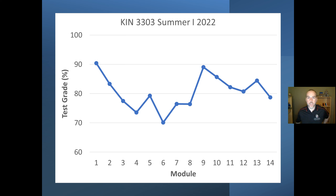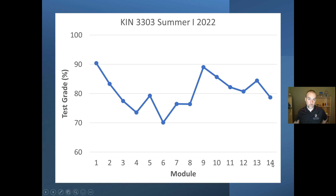So first, past student performance. This course is a little different every time I teach it, but looking at the previous semester — summer one 2022 — where it was very similar, you can see how the 45 students who took the class did. We're looking at test scores in percent for the 14 modules in the class, which will be the same this semester. The first module scored around 90%, the next still pretty high around 80-something, then scores dropped a little in modules three and four, stabilized, and actually got a little better later on.